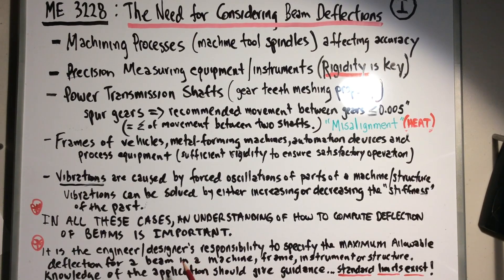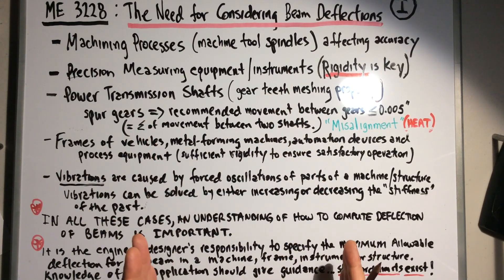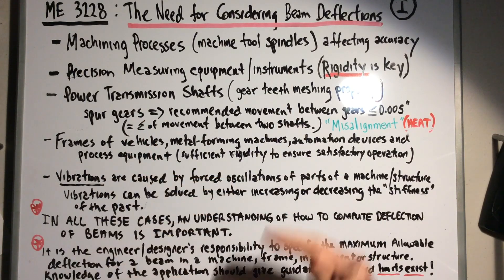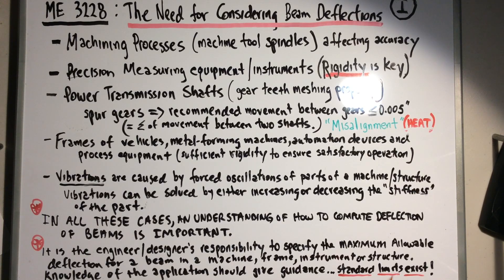It is the engineer's or designer's responsibility to specify the maximum allowable deflection for a beam in a machine, frame, instrument, or structure. Knowledge of the application should give you guidance — if you've done something similar before, that guides you on what deflection allowance is acceptable. However, when you're just getting into this field, you'll need to look at standards for limits of deflection, which we call allowables.